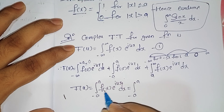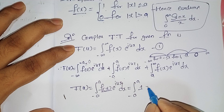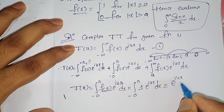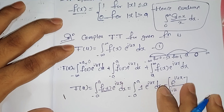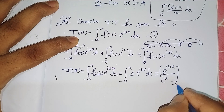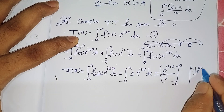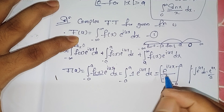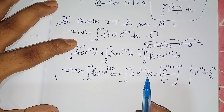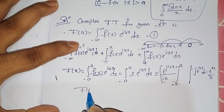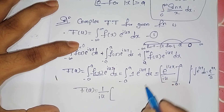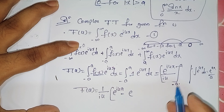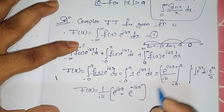Since f(x) = 1 on [−a, a], this becomes the integral from minus a to plus a of e^(iux) dx. Integrating, we get e^(iux) divided by the coefficient of x, which is iu, evaluated between the limits minus a and plus a. Using the formula: integral of e^(ax) dx = e^(ax)/a, here a = iu. After integration with respect to x, the limits apply to x, so we get (1/iu)[e^(iua) − e^(−iua)].